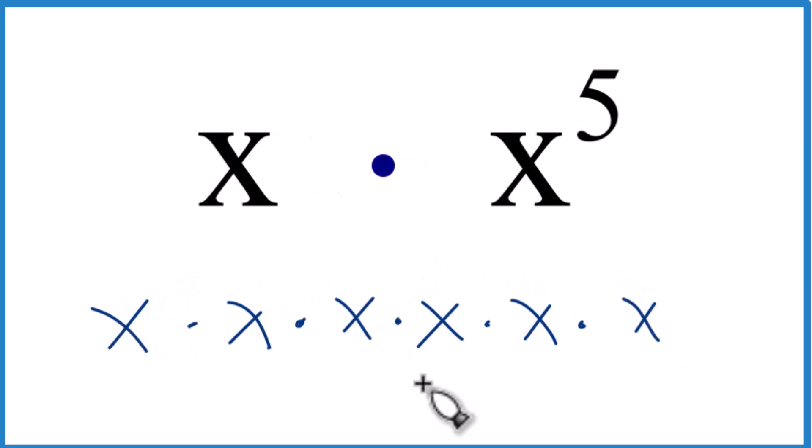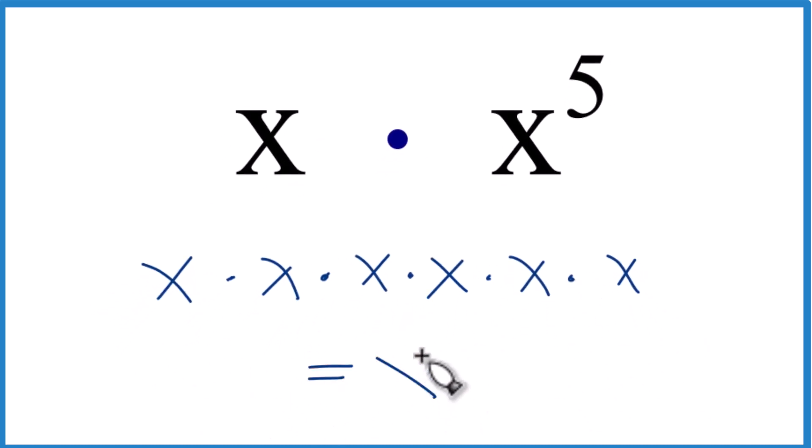So we have our x, then we have our five x's. This would be x to the fifth. Add them up. That equals x to the sixth.